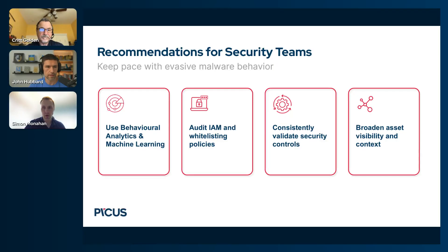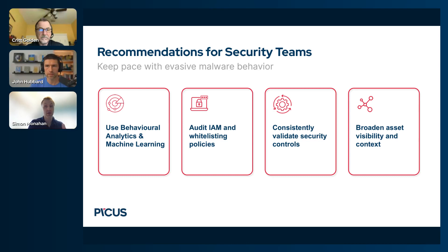The Red Report makes a number of recommendations to help security teams keep pace with the malware and techniques we're seeing now. These range from use of behavioral analytics and machine learning right through to validation. In your opinion, John, how can behavioral analytics and AI be used to help better detect some of the behaviors we've been talking about?